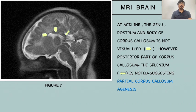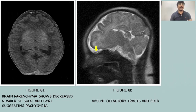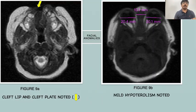On MRI brain sagittal section at midline, in the anterior part no corpus callosal tissue is noted, but posteriorly remnant corpus callosal tissue is noted, suggesting partial corpus callosal agenesis. Figure 8a shows decreased number of sulci and gyri in brain parenchyma, suggesting pachygyria. In figure 8b, absent olfactory tracts and bulb are noted. Regarding facial anomalies, figure 9a shows cleft lip and cleft palate, and in figure 9b, mild hypotelorism is noted.